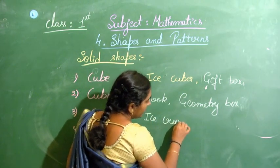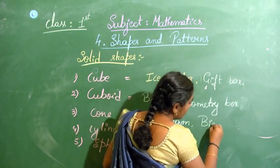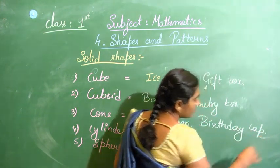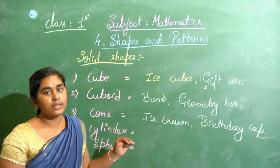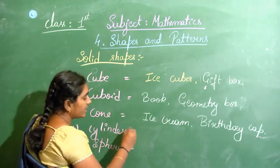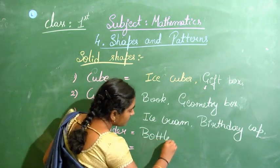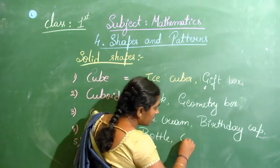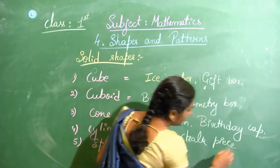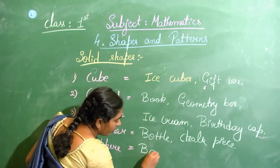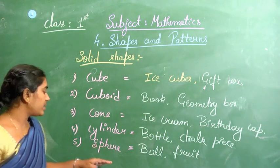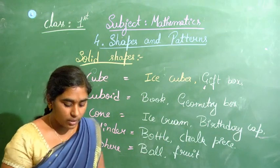For cone: examples are an ice cream cup, a birthday cap, or the cone-shaped obstacles placed on roads during construction. For cylinder: a water bottle, a chalk piece, or a stick. For sphere: a ball, or fruits and vegetables are of sphere shape.